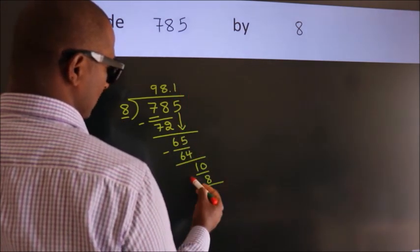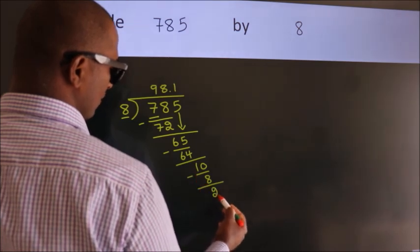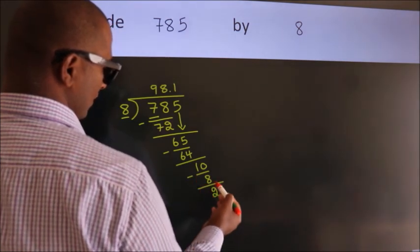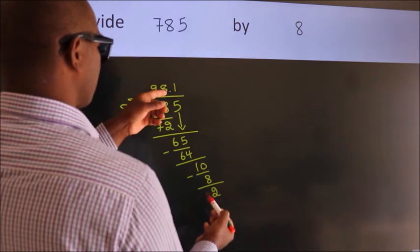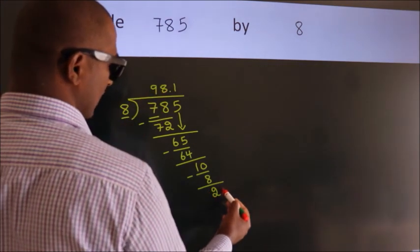Now, we subtract. We get 2. After this, we already have the decimal. So directly take 0.